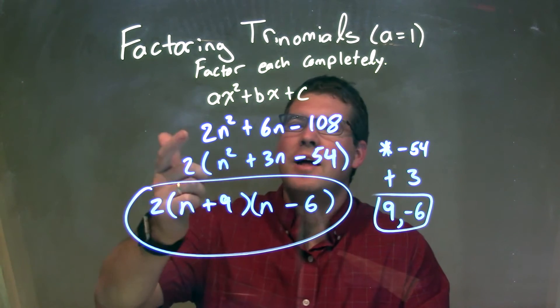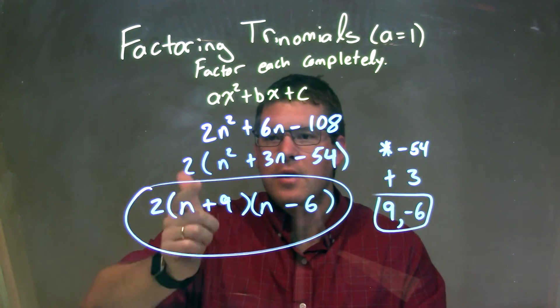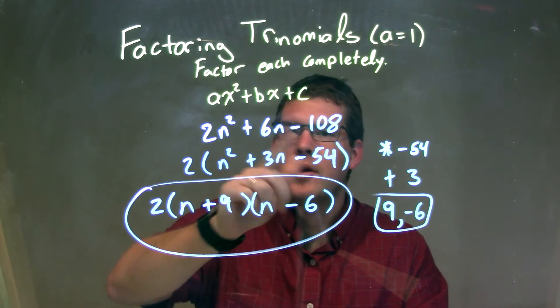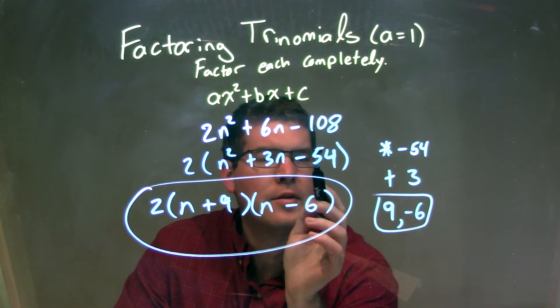So let's recap. We're given 2n squared plus 6n minus 108. We're going to pull out a 2 from all parts. By pulling out a 2 from all parts, we are left with 2 times n squared plus 3n minus 54.